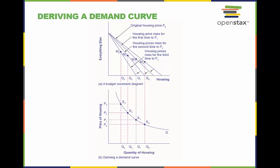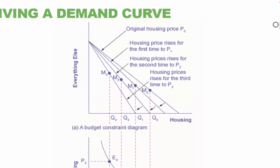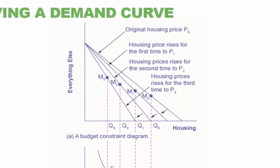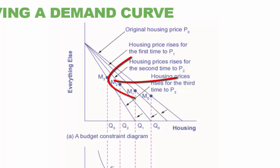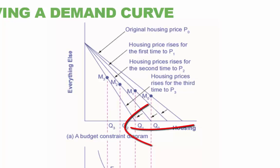We see on these graphs that we can extend the utility maximization exercise into the realm of demand curves. In the upper graph, we see that as the price for housing increases from P0 to P1 to P2 to P3, the budget constraint on the upper part of the diagram shifts to the left. The utility maximizing choice changes from M0 to M1 to M2 to M3. As a result, the quantity demanded for housing shifts from Q0 to Q1 to Q2 to Q3.